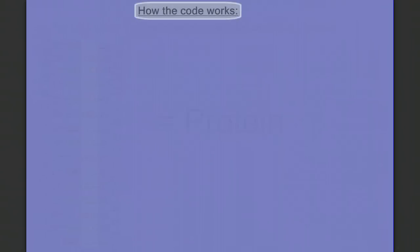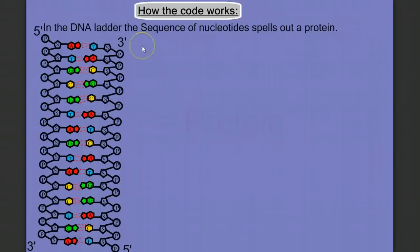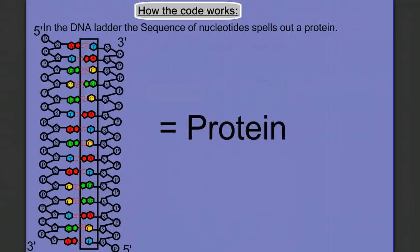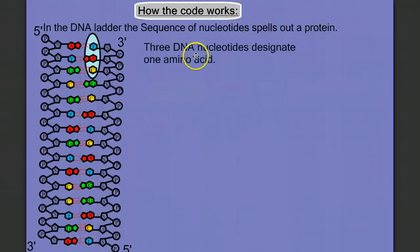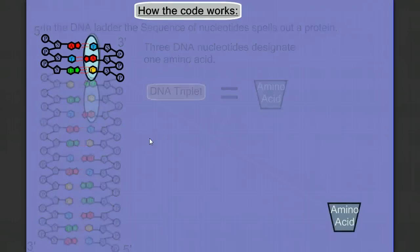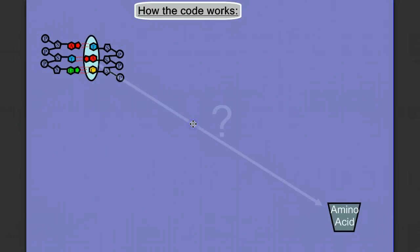Now let's investigate how the code works. In a DNA molecule — in the DNA ladder — a sequence of nucleotides spells out a protein, but only one side of the DNA ladder holds that code. The code works in units of three. We call a sequence of three DNA nucleotides a DNA triplet, and one DNA triplet is enough information to code for one amino acid. Let's follow the process with just one DNA triplet and see how we get from that triplet to an amino acid.